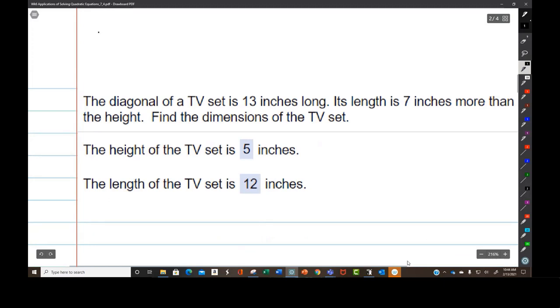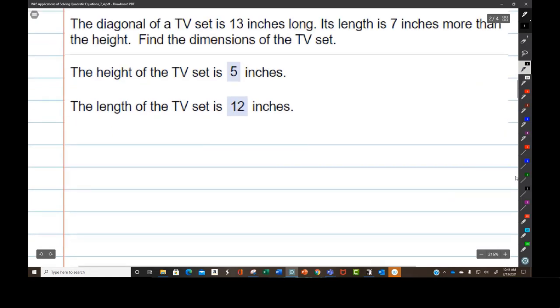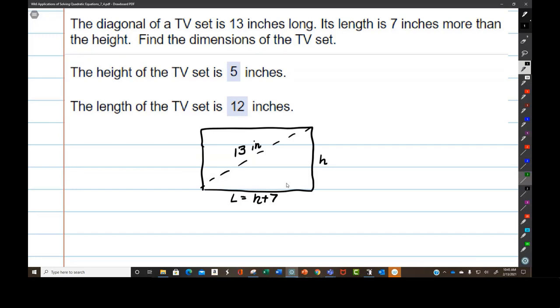I am particularly interested in these problems. The diagonal of a TV set is 13 inches long. Here's the diagonal. We have 5 minutes to go. Its length, here's the length, is 7 inches more than the height. This says the length is 7 inches more than the height. Here's the height. Find the dimensions, the length and the height, of the TV screen or the TV set.